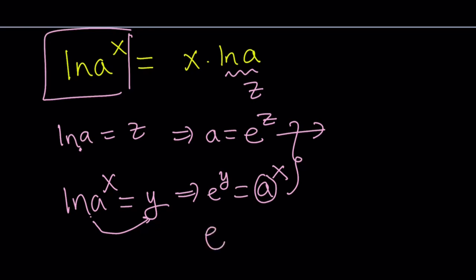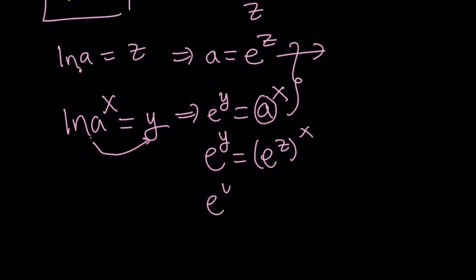So, this becomes e to the power y equals e to the power z to the power x. And then from here, we get e to the y equals e to the power zx, which means y equals zx.